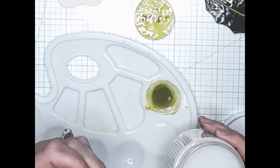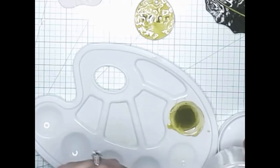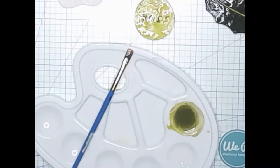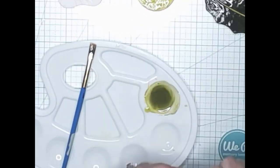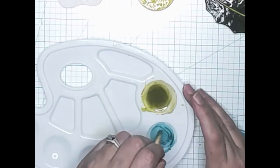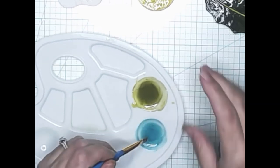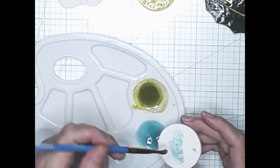For my next couple ornaments, I'm going to go ahead and repeat the exact same process with different colors. Just adding a little bit of the triple thick glaze to the paint palette. And adding different colors of alcohol ink to the glaze until I get a color I like. And then just glazing the dried ornaments with those colors and allowing them to dry.